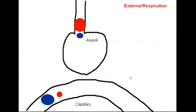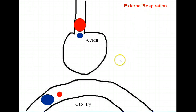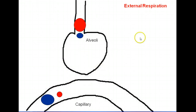In this screencast I'm going to review the processes of external and internal respiration. We're going to start with external respiration, which involves the processes between the alveoli and the capillaries. The alveoli have a very thin membrane and capillaries have a very thin membrane, so diffusion is going to occur between these two structures.